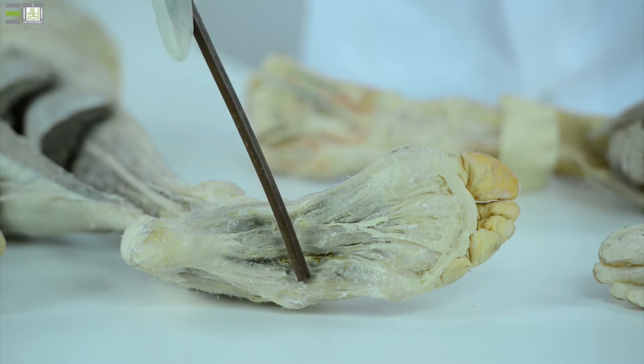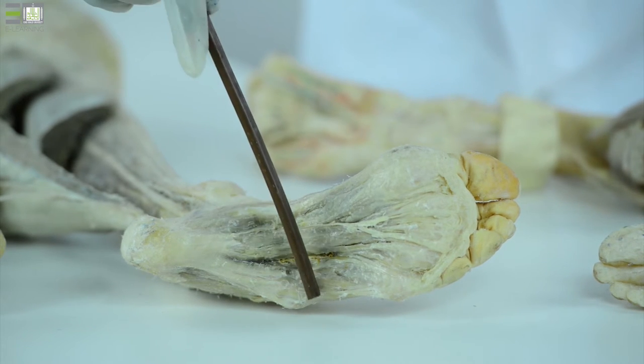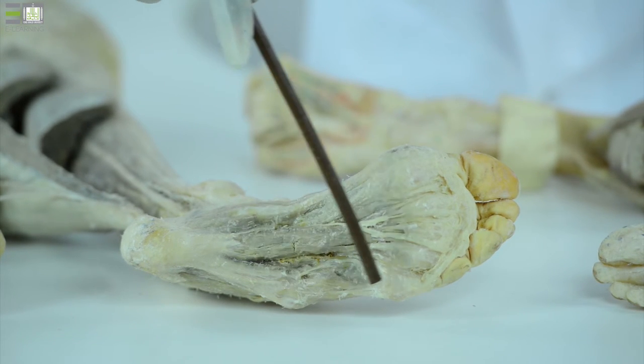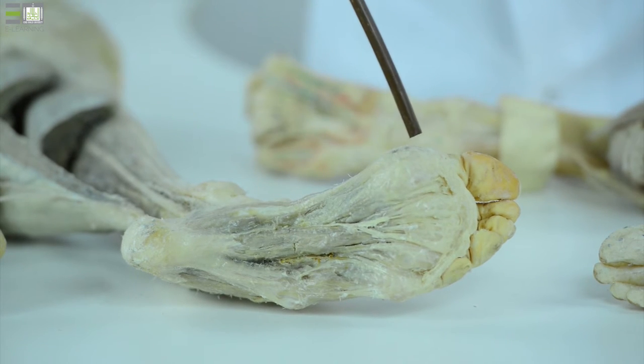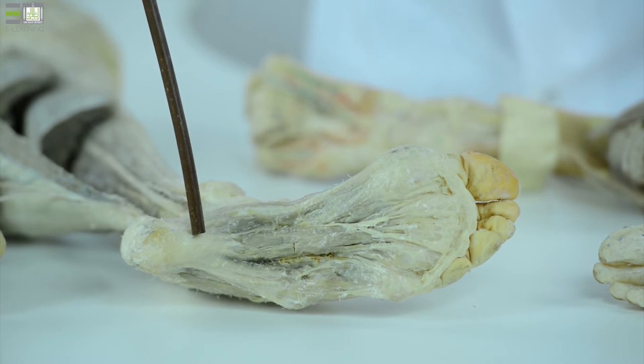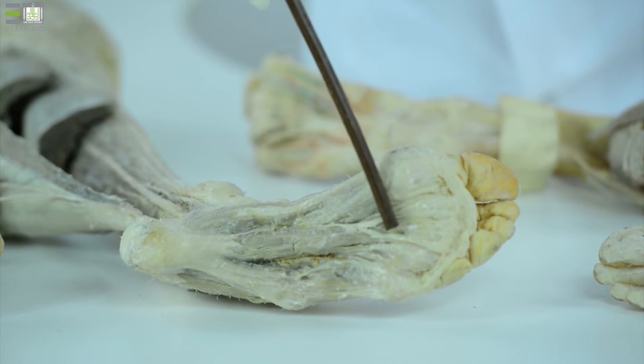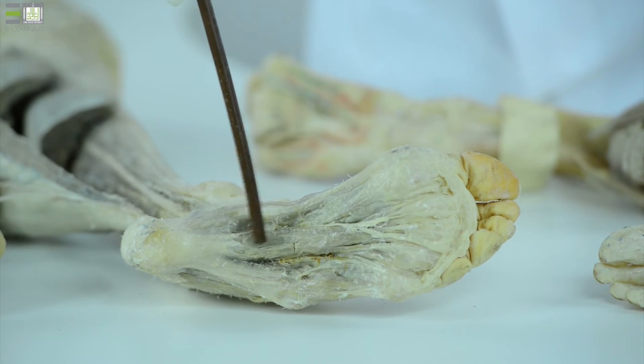Two abductors, medial and lateral, and one flexor. The abductors are abductor digiti minimi for the little toe and abductor hallucis for the big toe, and there is a flexor for the remaining toes called flexor digitorum brevis muscle.